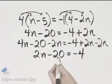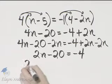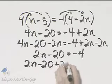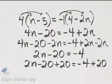Now notice I have a variable term, constant, constant. I will now add 20 to both sides. Here's my left side. I'll add 20. And then don't forget, here's my right side. I'll add 20.